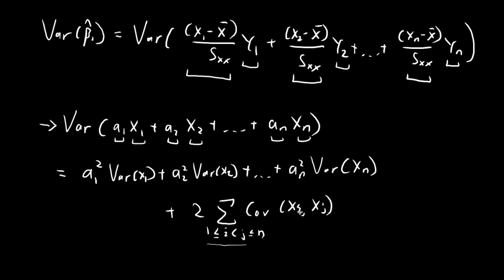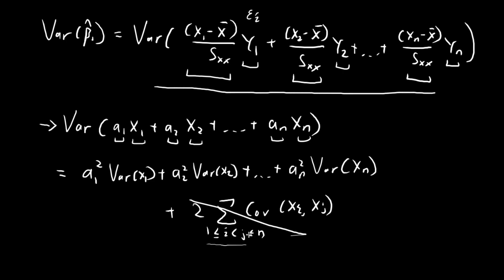If the covariance between all the random variables equals 0, we can ignore that covariance term entirely. That is exactly our case here, because all the y terms are uncorrelated with one another. All the randomness in the y terms comes from the error terms, and the error terms are mutually uncorrelated, so all covariance terms equal 0.